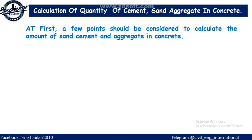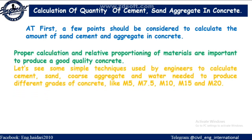A few points should be considered to calculate the amount of sand, cement, and aggregate in concrete. Proper calculation and relative proportioning of materials are important to produce good quality concrete. Let's see some simple techniques used by engineers to calculate cement, sand, coarse aggregate, and water needed to produce different grades of concrete, like M5, M7.5, M10, M15, and M20.